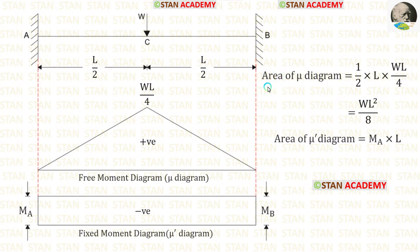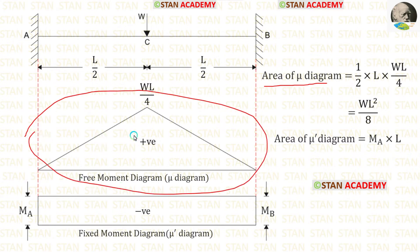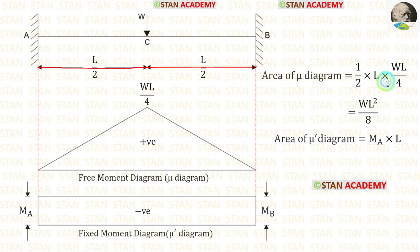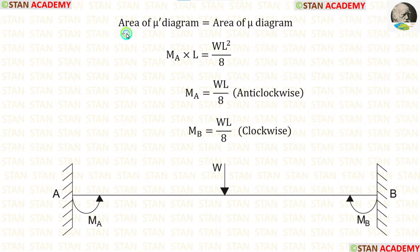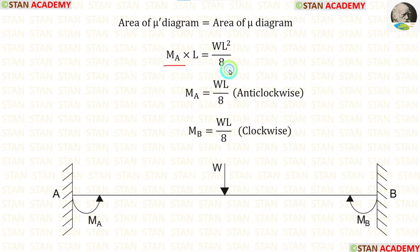Now let us find the area of the μ diagram. This is a triangle, and the formula for the area of a triangle is half into breadth into height. Here, the breadth is L and the height is WL/4. So we get the area as WL²/8. Now let us find the area of the μ' diagram. This is a rectangle, with area equal to length into width. The length is L and the width is MA. The area of the μ' diagram and the area of the μ diagram will be equal. Equating both of them and cancelling L, we get MA equal to WL/8.